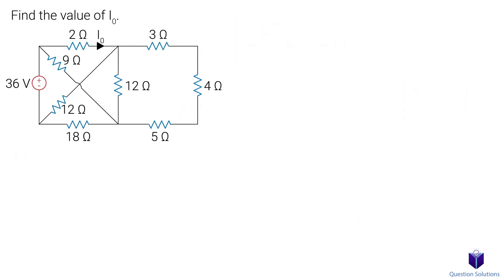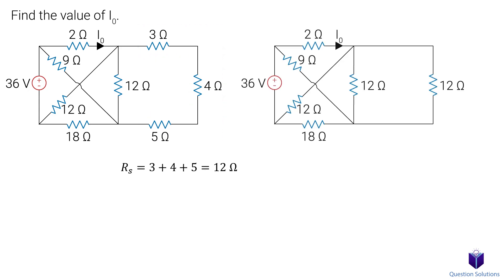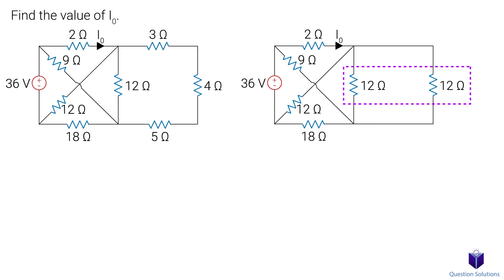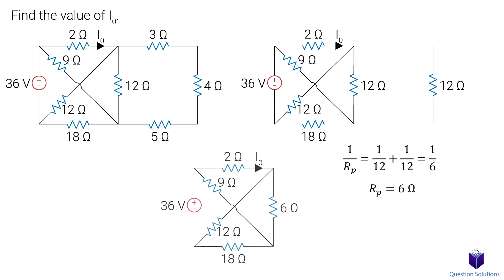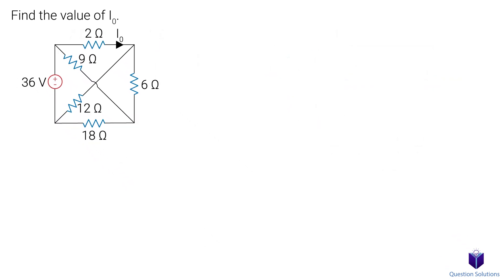Let's take a look at this question where we need to figure out I0. Looking at the circuit, we can straight away see that these three resistors are in series, so let's combine them. Now we see that these two resistors are parallel to each other, so we can combine them too. So now we have this weird-looking circuit and really no other ways to combine the rest of the resistors.